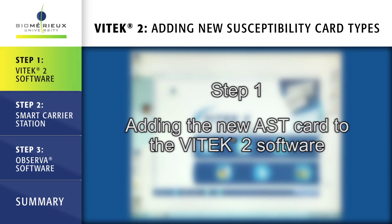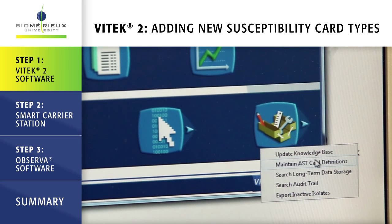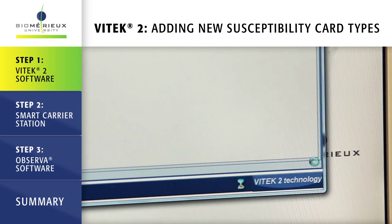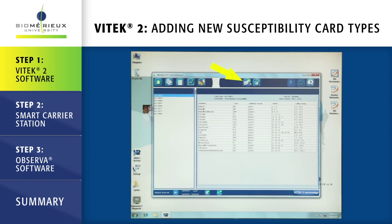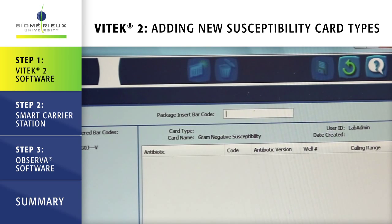Step 1: Adding the new AST card to the Vitek 2 software. From the Vitek main menu, click on the utilities icon. Click on maintain AST card definitions. Click on the enter new AST card type icon. In the package insert barcode field,